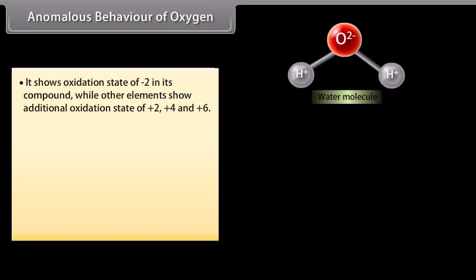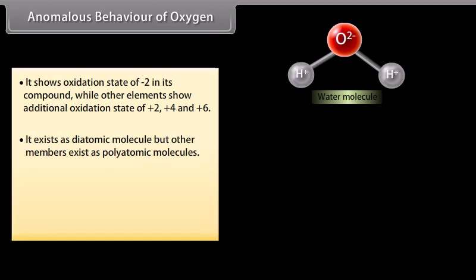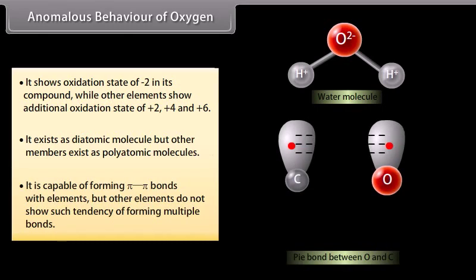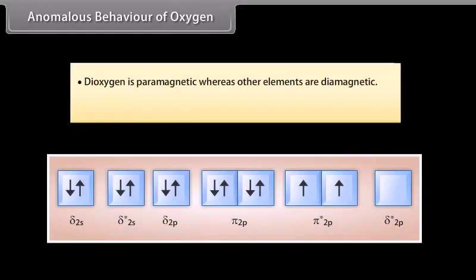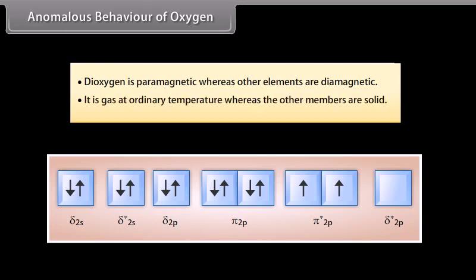Anomalous behavior of oxygen. Oxygen differs from rest of the elements in the family in the following respects: It shows oxidation state of -2 in its compounds, while other elements show additional oxidation states of +2, +4 and +6. It exists as a diatomic molecule, but other members exist as polyatomic molecules. It is capable of forming pi-pi bonds with elements, but other elements do not show such tendency of forming multiple bonds. Dioxygen is paramagnetic, whereas other elements are diamagnetic. It is a gas at ordinary temperature, whereas the other members are solid.